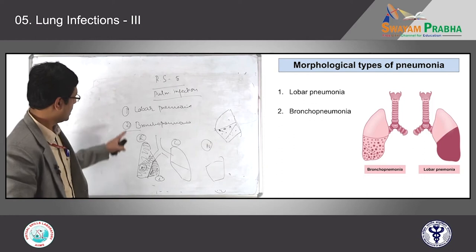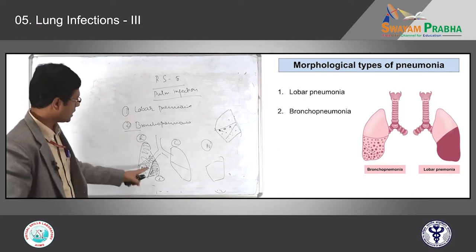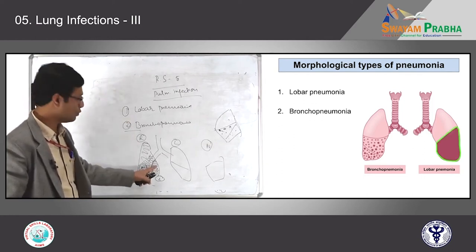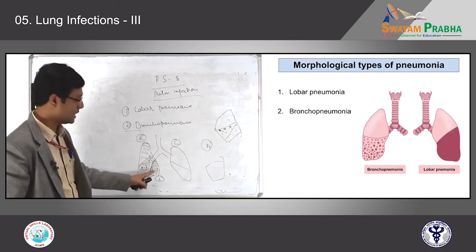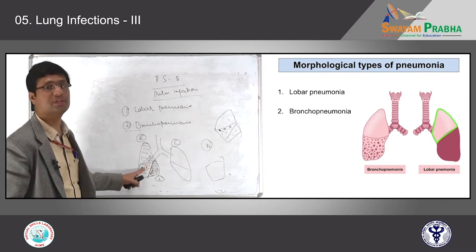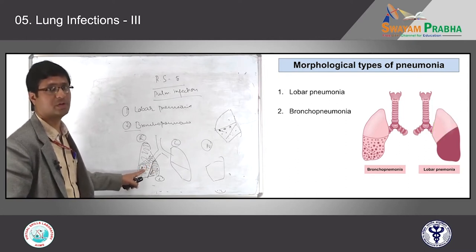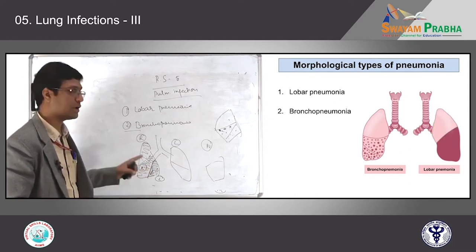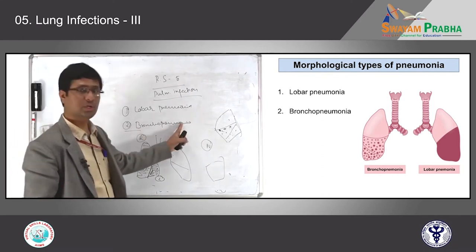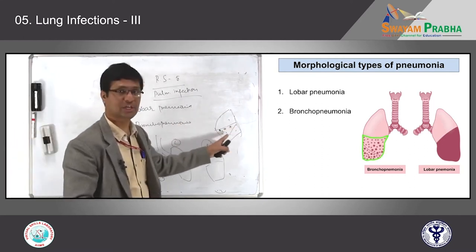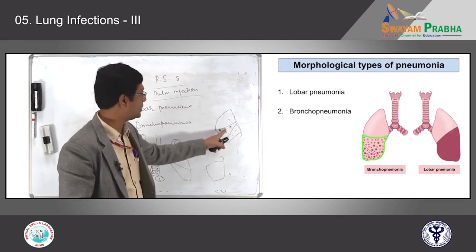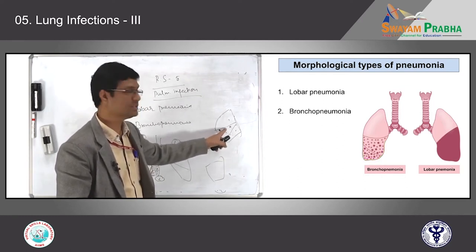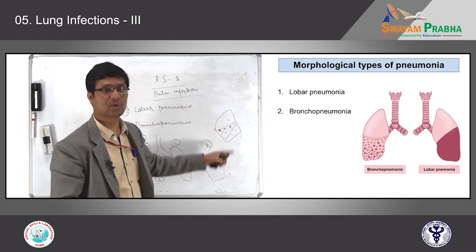To repeat: lobar pneumonia means complete involvement of one lobe of the lung — it may be one lobe, two lobes, or the whole lung. If one lobe is involved, the next lobe is perfectly fine and uninvolved. Bronchopneumonia usually shows multiple patchy involvement of more than one lobe, with intervening lung parenchyma between the pink patches being normal.